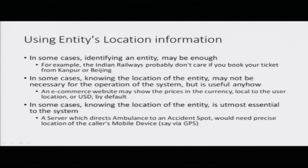Now we come to entity location information. In some cases identifying an entity may be enough. For example, IRCTC doesn't really care if you are booking your ticket from Kanpur or Beijing — all they need to know is who is booking the ticket. In some cases knowing the location may not be necessary but it may be useful. For example, an e-commerce website can show currencies in rupees if you are logging in from India, or US dollars otherwise.